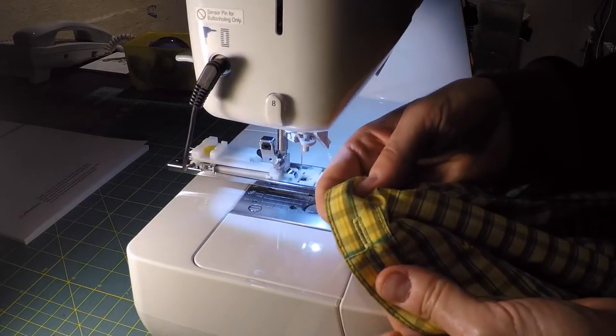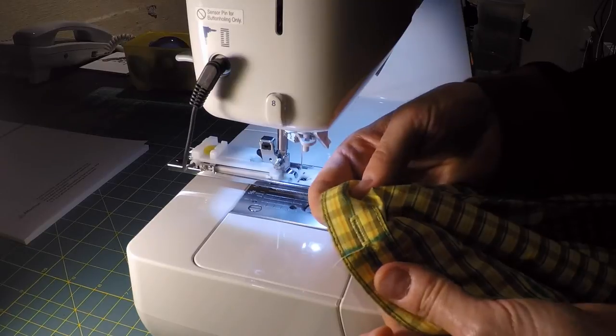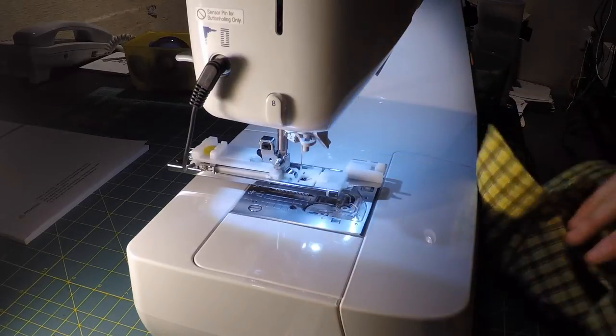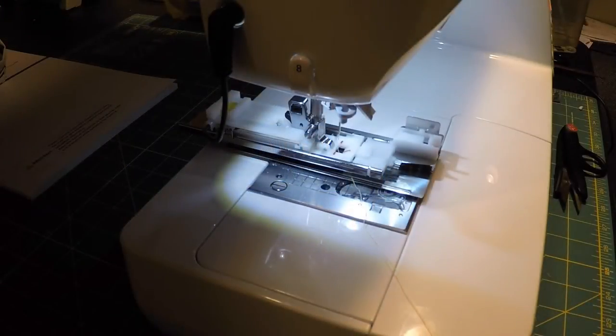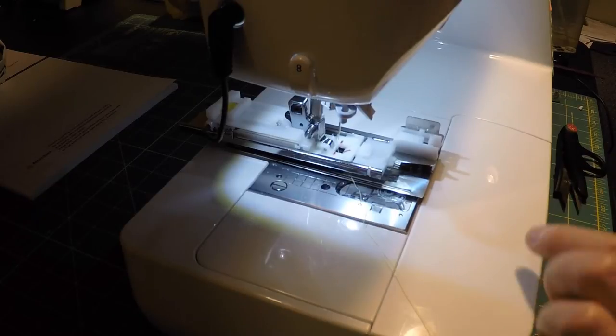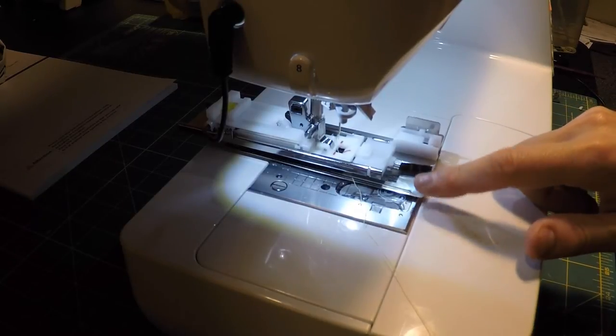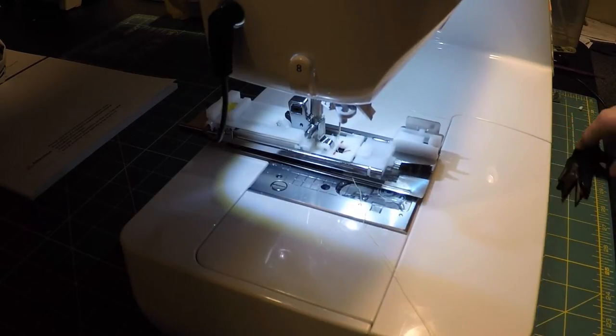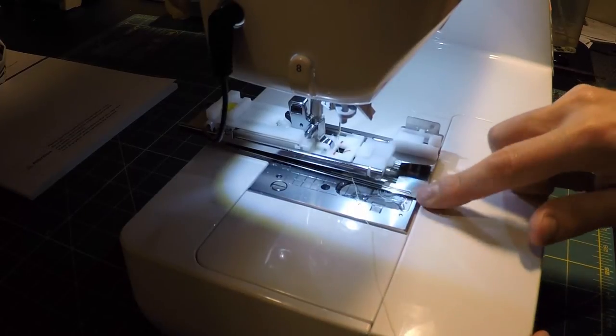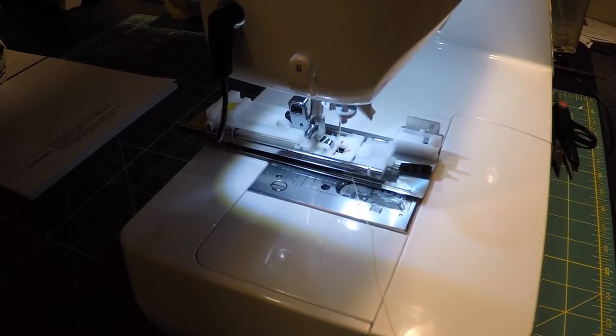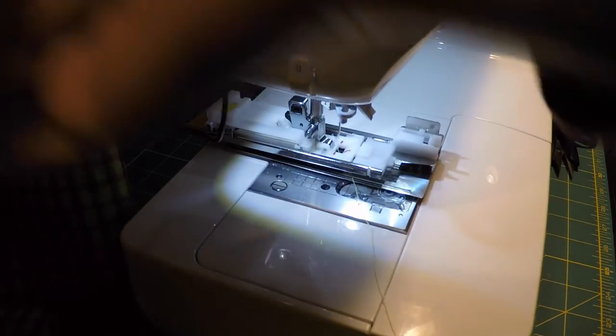And we have a buttonhole. Interesting features of the buttonhole foot is that it has this optional bottom clamping plate, and that comes into play if you have problem fabrics that are difficult to feed through the machine. That could be very thin things or very thick things.